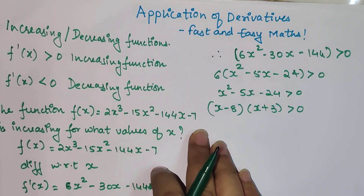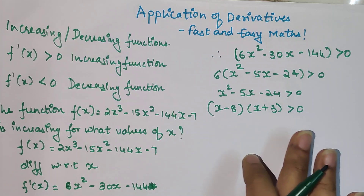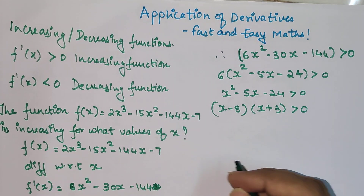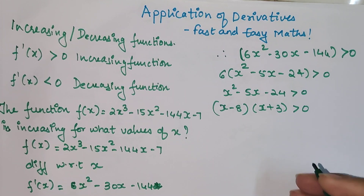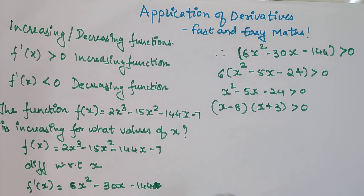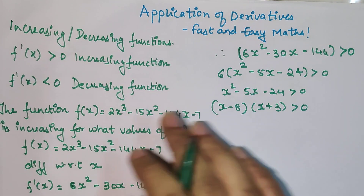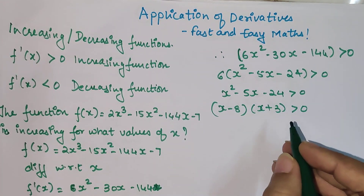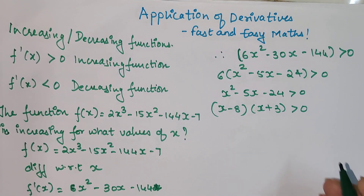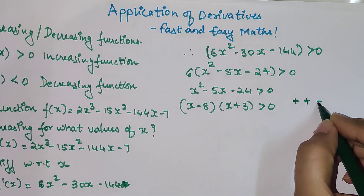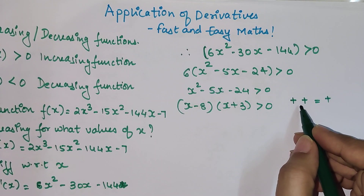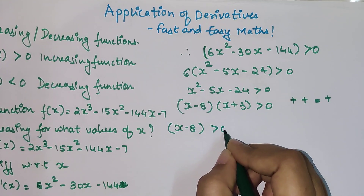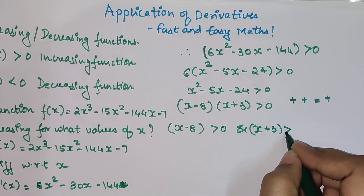Please understand — a lot of students make a mistake here. They think that x is greater than 8 and x is greater than negative 3 are the values of x, but that is not how it works. We have a product here. If you want a product to be greater than 0 — meaning positive — it has to be either positive × positive = positive. So the first scenario is: x - 8 > 0 and x + 3 > 0.